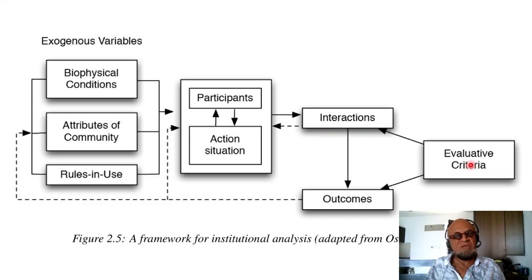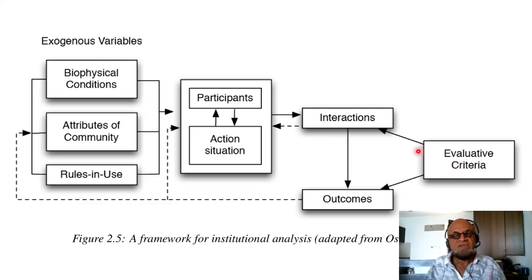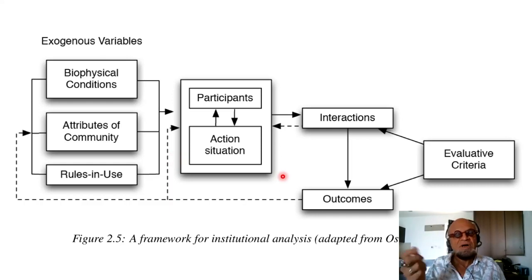You get feedback between the exogenous variables, the action situation, and participants' interactions. Evaluation criteria — like exams and grading in a university, or sales, pricing, and distance for shopping — determine outcomes, which typically feed back to the exogenous variables. Biophysical conditions and community attributes react to the outcome based on their evaluative criteria, which may be implicit or explicit, and they affect the rules in use. This is a good feedback system, and you can immediately see how hard it is to determine whether it produces net negative or positive feedback — and whether small perturbations get amplified into unmanageable situations.